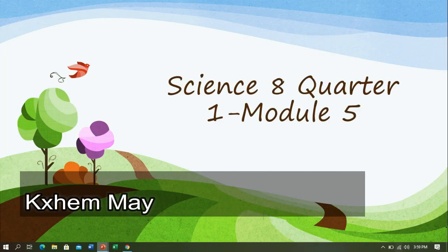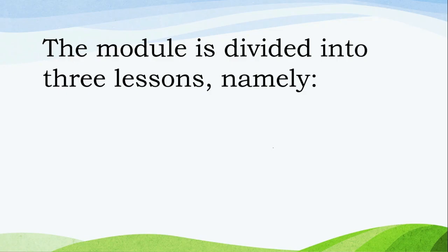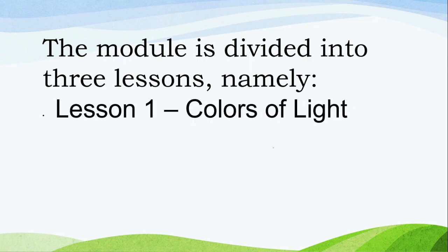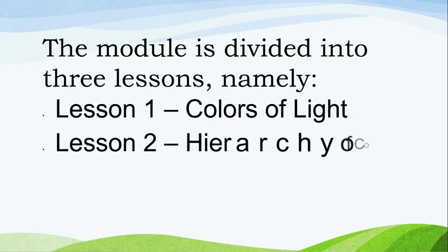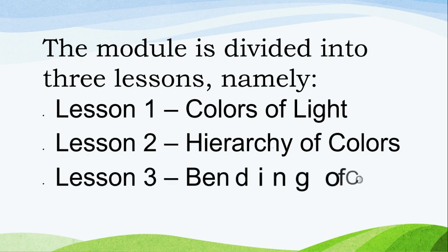Our next lesson for today is Science 8, Quarter 1, Module 5: Colors of Light. The module is divided into three lessons, namely: Lesson 1, Colors of Light; Lesson 2, Hierarchy of Colors; Lesson 3, Bending of Colors.